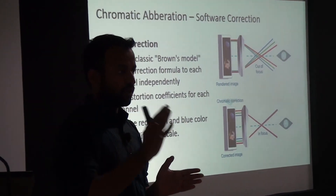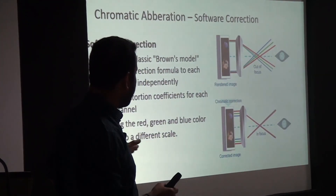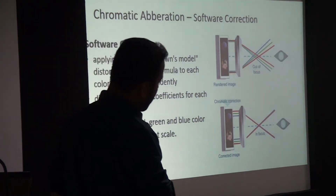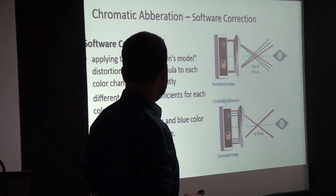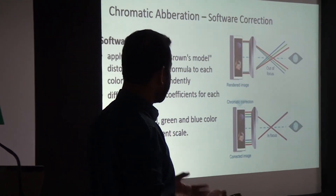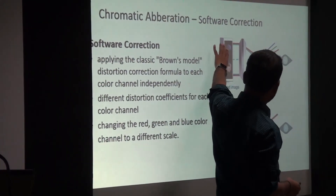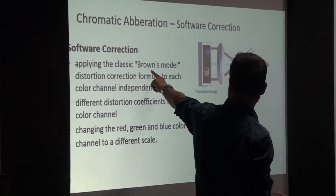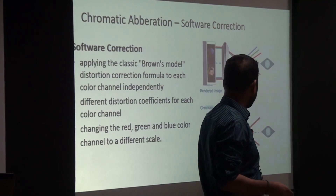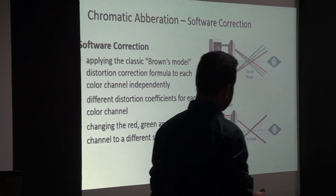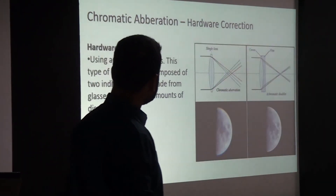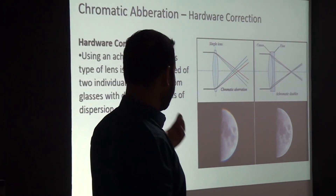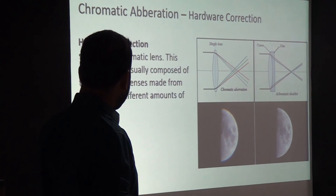Applying the same distortion formula to each color channel with a different coefficient makes all colors converge onto the same place after passing through the lens. This changes the red, green, and blue color channels to different scales. The image is distorted based on the Brown-Conrady model, and when seen through the lens, all colors are at the same place. The other correction is hardware-based, using achromatic lenses — a combination of a convex and a concave lens — to correct chromatic aberration optically.